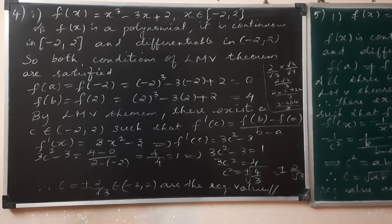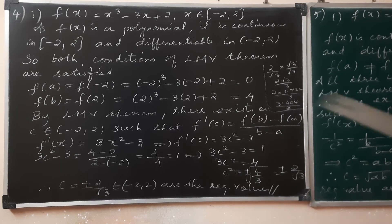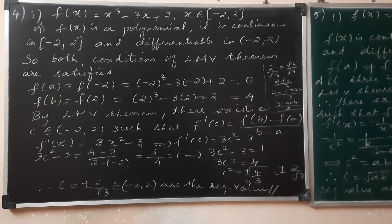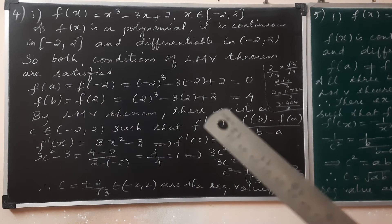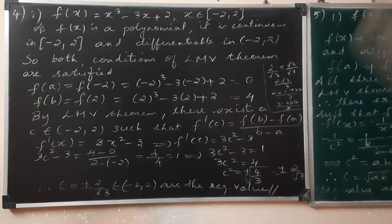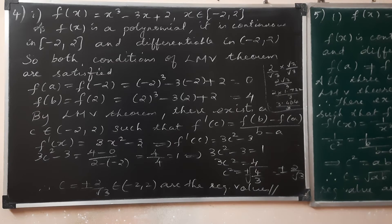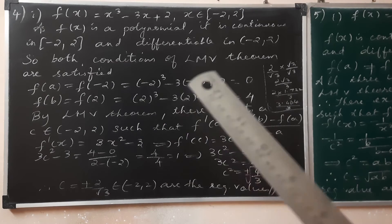The given function is a polynomial. Therefore, f(x) is a polynomial, which means it is continuous on the closed interval [-2, 2] and differentiable on the open interval (-2, 2). Both conditions of the LMV theorem are satisfied. Computing f(-2) = 0 and f(2) = 4, which are different, confirming the setup.